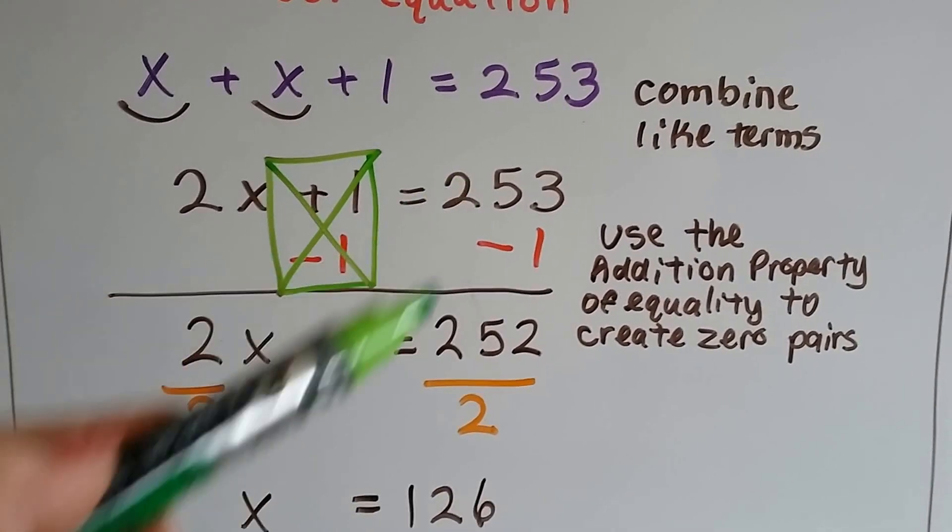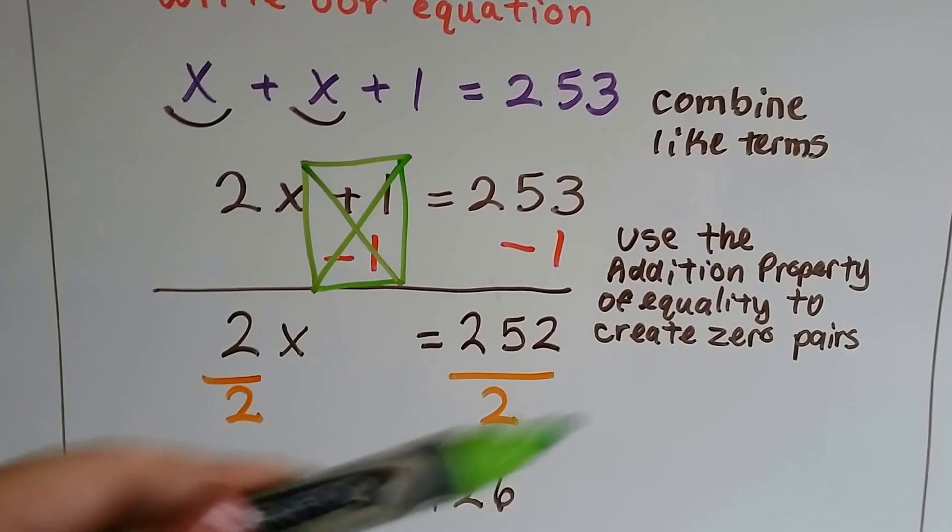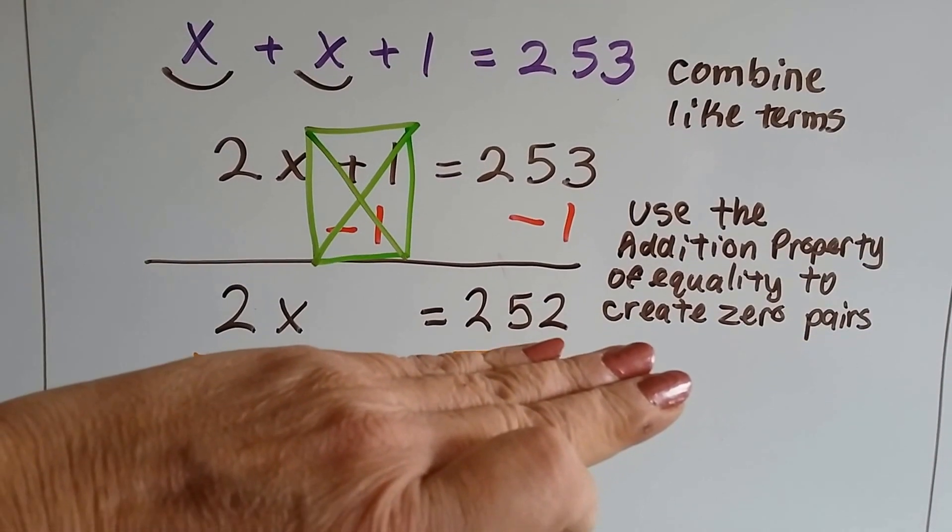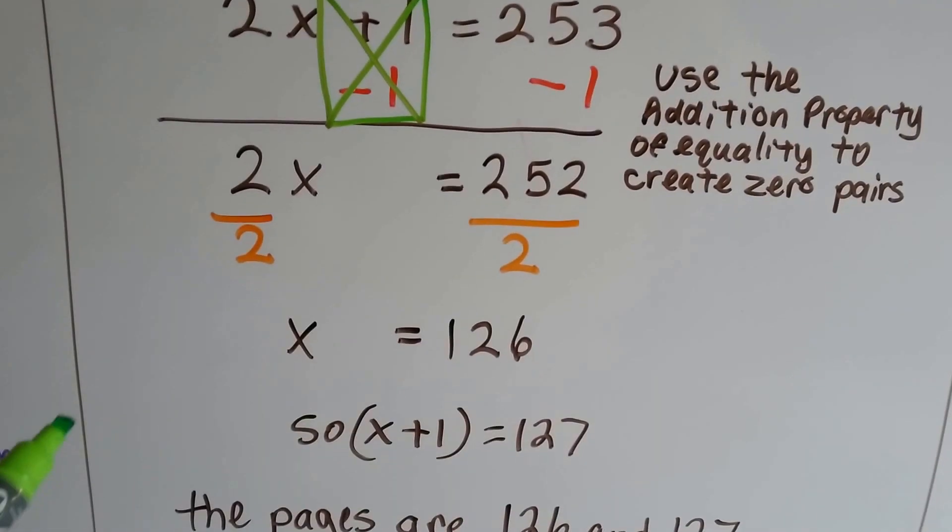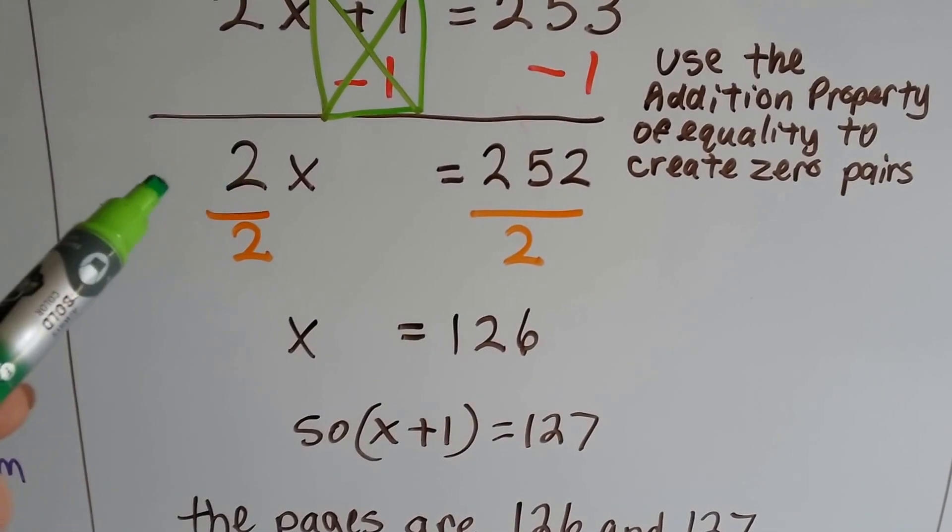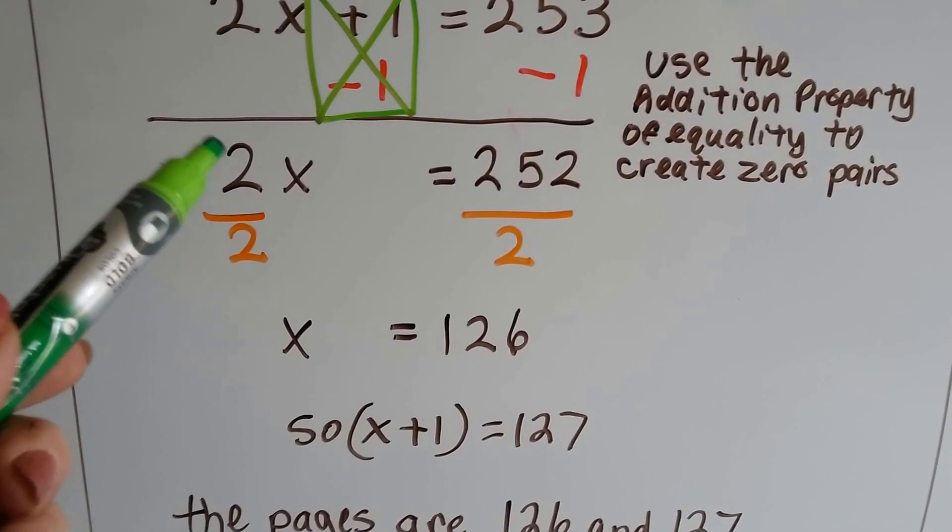Now we got a zero pair here and we eliminated that plus one. And we take away one from this side and we get 252. Now our equation says 2x equals 252.